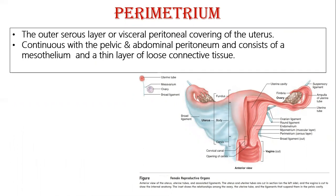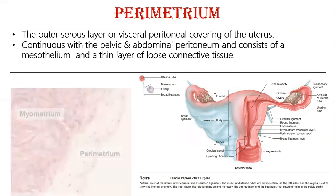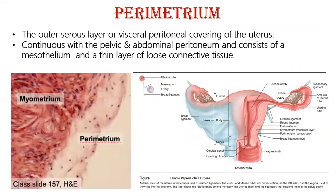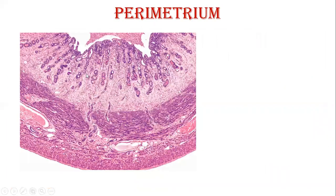The perimetrium is continuous with the pelvic and abdominal peritoneum and consists of mesothelium and a thin layer of loose connective tissue — it will be simple squamous epithelium. You can make out the simple squamous epithelium as mesothelium. Beneath this will be your myometrium.